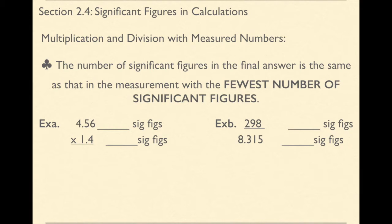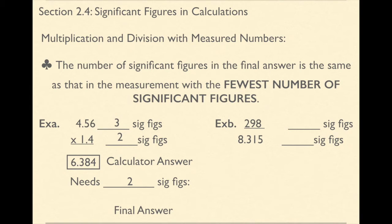If you look at example A, 4.56 has three significant figures, 1.4 has two. And so when I multiply those together, the answer I get is 6.384. Now I need to round that answer and I'm going to round it to two significant figures. And so my answer is going to be six point and then the tenth is what I need to round to. So that's going to be rounded to 6.4 because that's two significant figures.